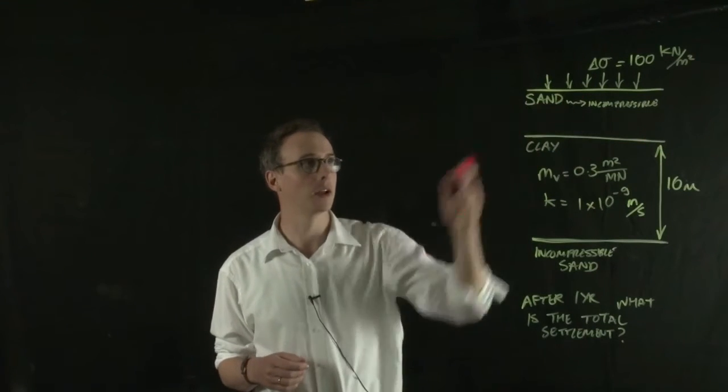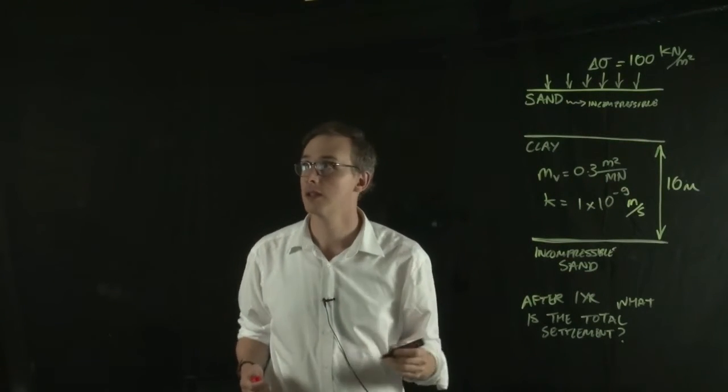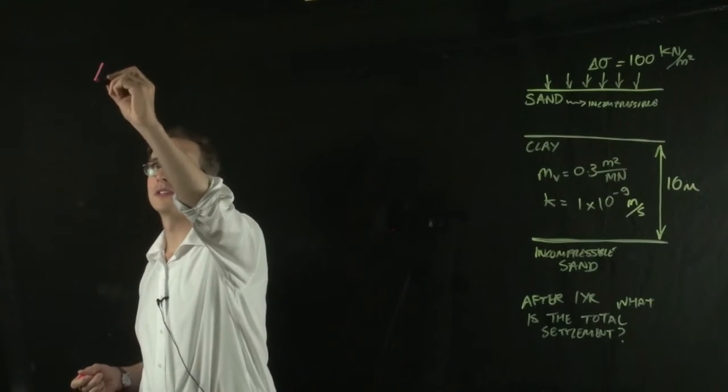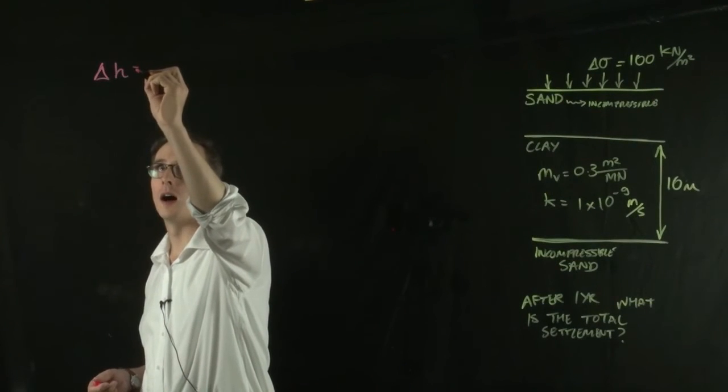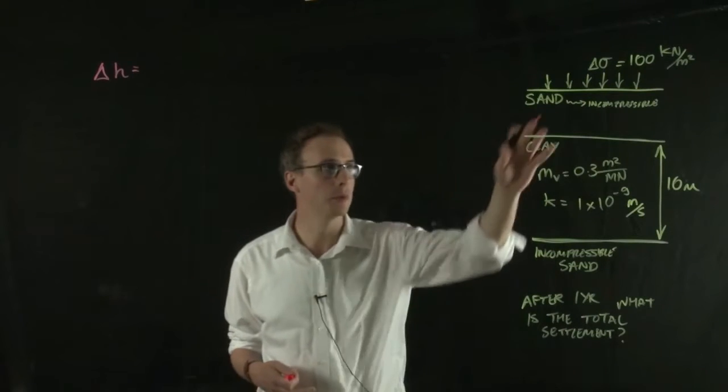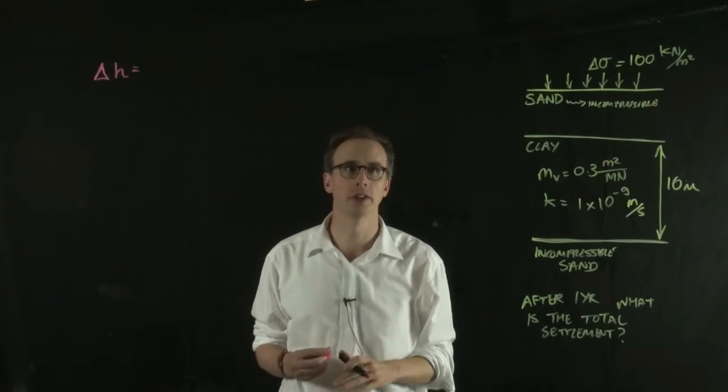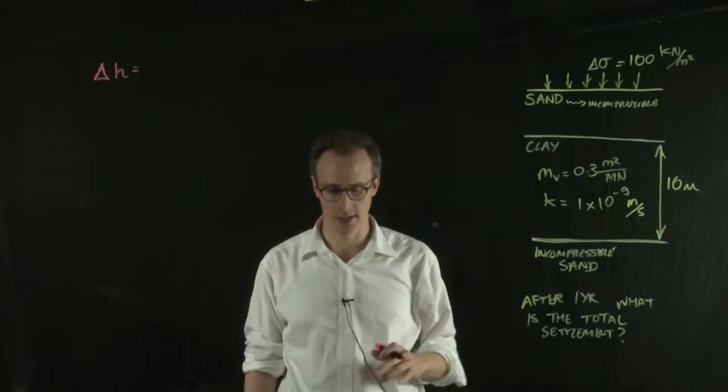So the first step is to say, what is the maximum settlement given that new load? So we ask, what is delta H, the maximum settlement for 100 kN per meter squared in this clay layer?